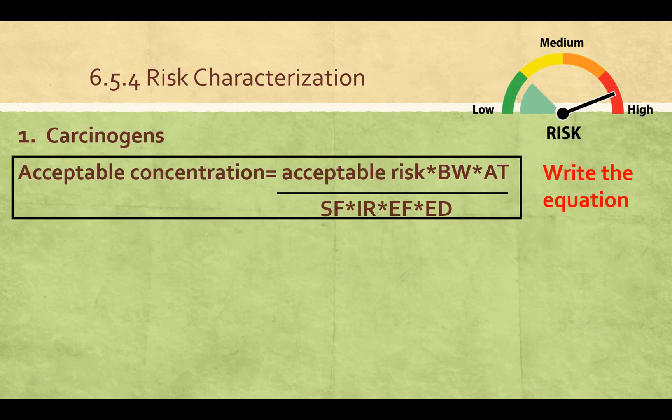For carcinogens, the acceptable concentration equals acceptable risk times BW times AT, over SF times IR times EF times ED. So make sure you write this equation down. There's a lot of studies that show writing helps you commit to memory and remember better than typing or just watching this video. We'll go through each of these variables.